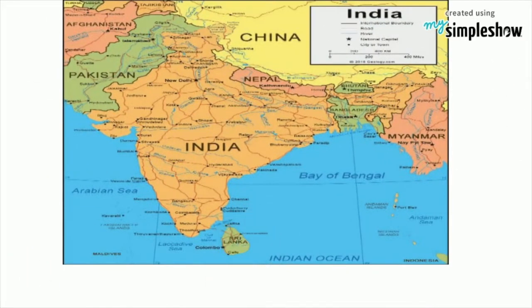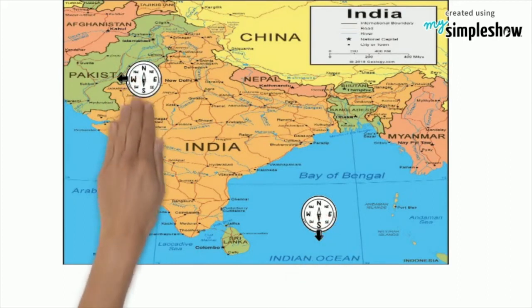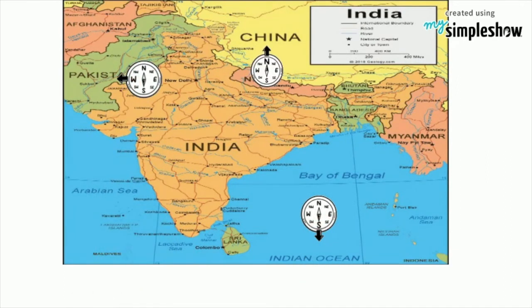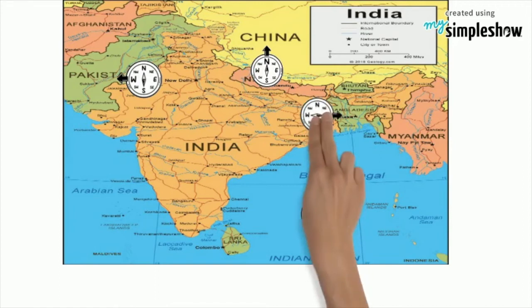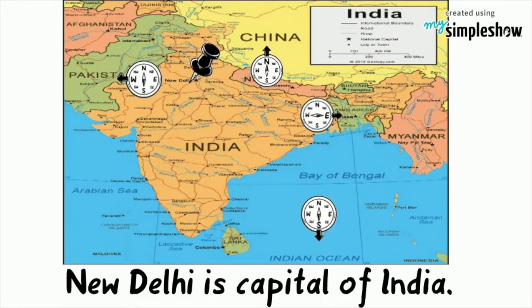India is bounded by the Indian Ocean on the south. It shares land borders with Pakistan to the west, China to the north, and Bangladesh to the east. New Delhi is the national capital of India.